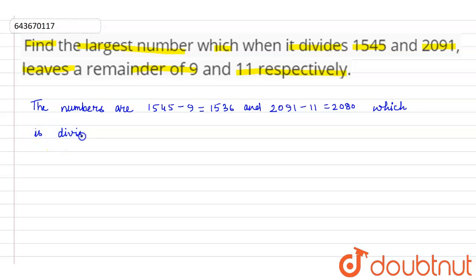These numbers are divisible by the largest number. Here the largest number will be the HCF of 1536 and 2080.